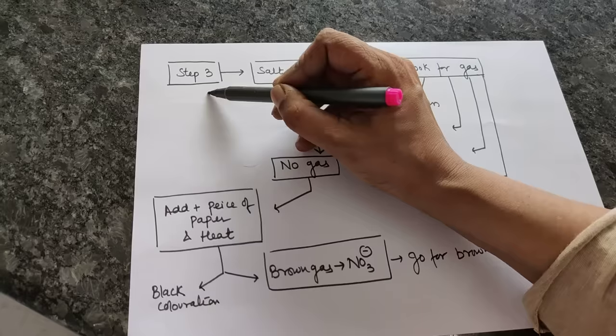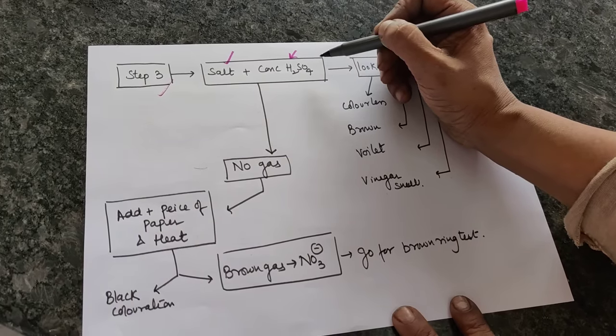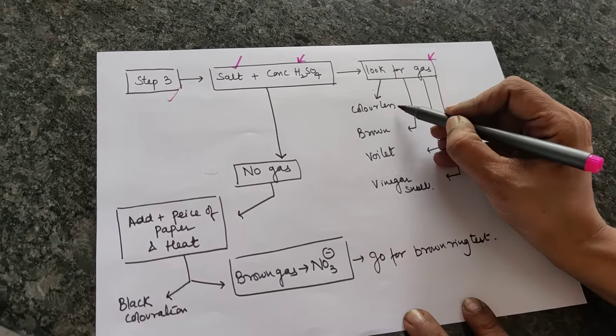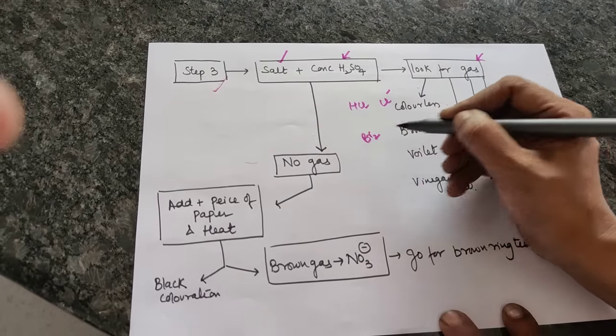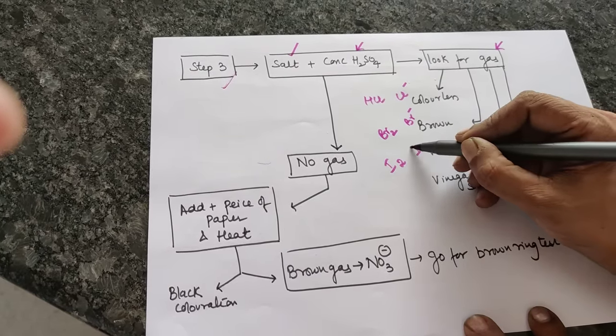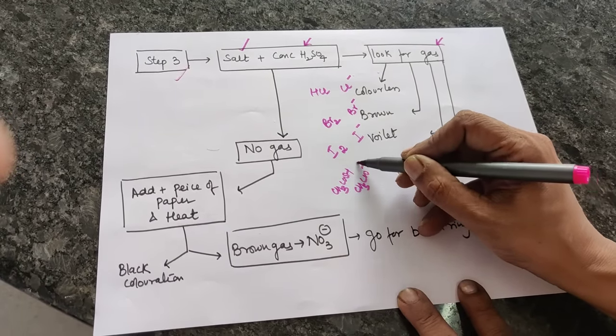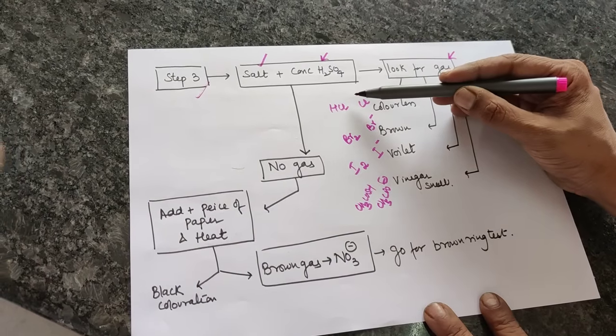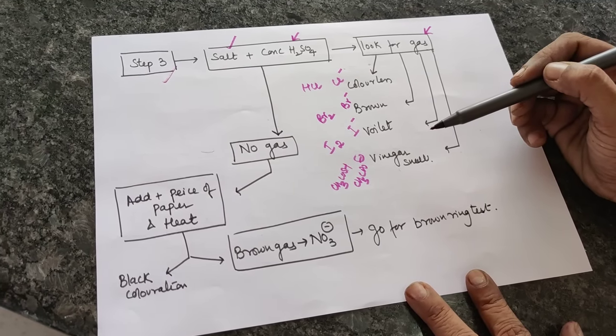When dilute sulfuric acid gives no gas and those anions are absent, you will move to step three. In step three, again take a pinch of salt. Now you will add concentrated sulfuric acid, and this is to be done by dropper - do not do it directly. After adding concentrated sulfuric acid, you have to look for a gas. If colorless gas comes, the gas is HCl and the anion is chloride. If brown gas comes, the gas is Br2 and the anion is bromide. If violet gas comes, the gas is I2 and the anion is iodide. If vinegar-like smell comes, the gas is CH3COOH and the anion is acetate.